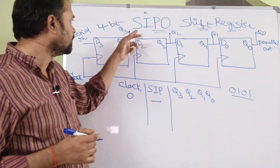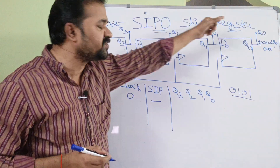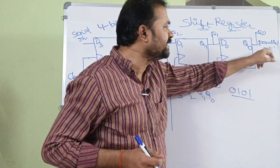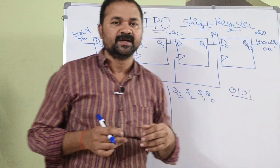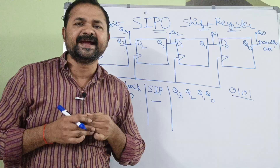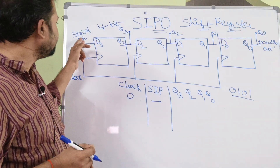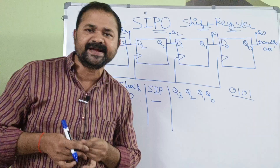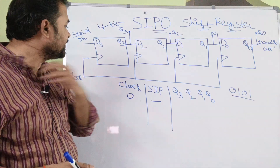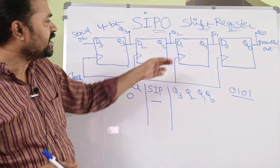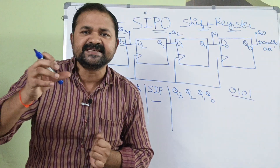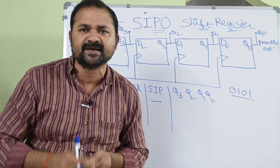Let us discuss about the SIPO shift register. SI means serial in, PO means parallel out. The name itself specifies the meaning: serial input means we have to apply the inputs in a serial manner, that is bit by bit, whereas parallel output means the shift register produces the output in parallel.